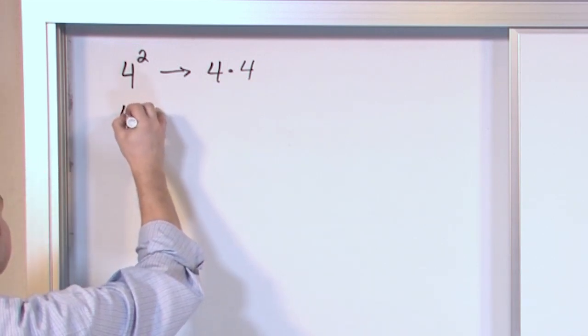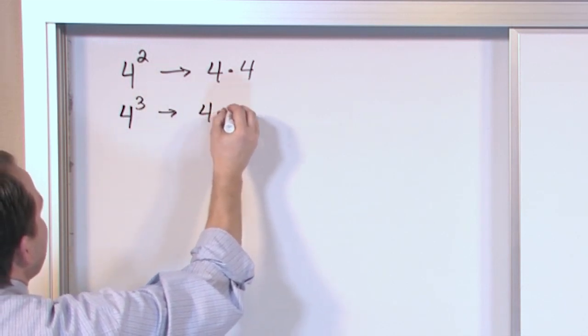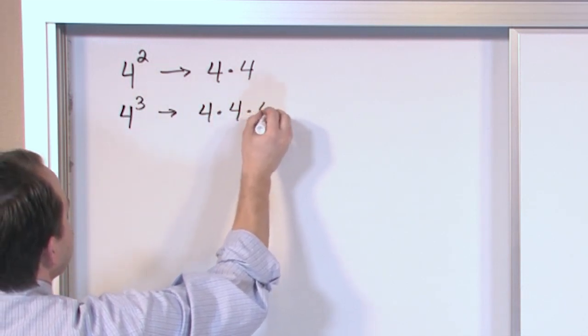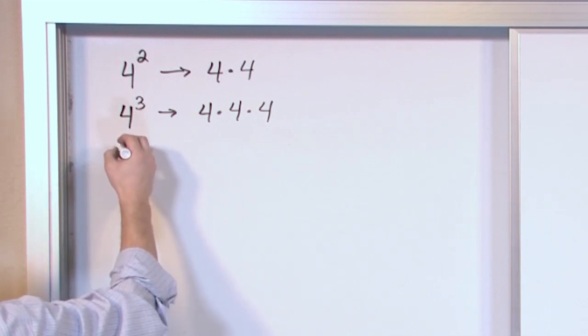So likewise, four raised to the power of three would be four times four times four. You multiply by itself three times because that's the number indicated at the top. And it can be any number you want.